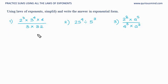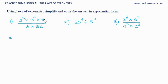Let's simplify this using the rules. Whenever we have numbers like 2, 3, 4, look for prime numbers. Here, 4 can be represented as 2 raised to 2, and 32 can be represented as 2 raised to 5. So we will first change that.